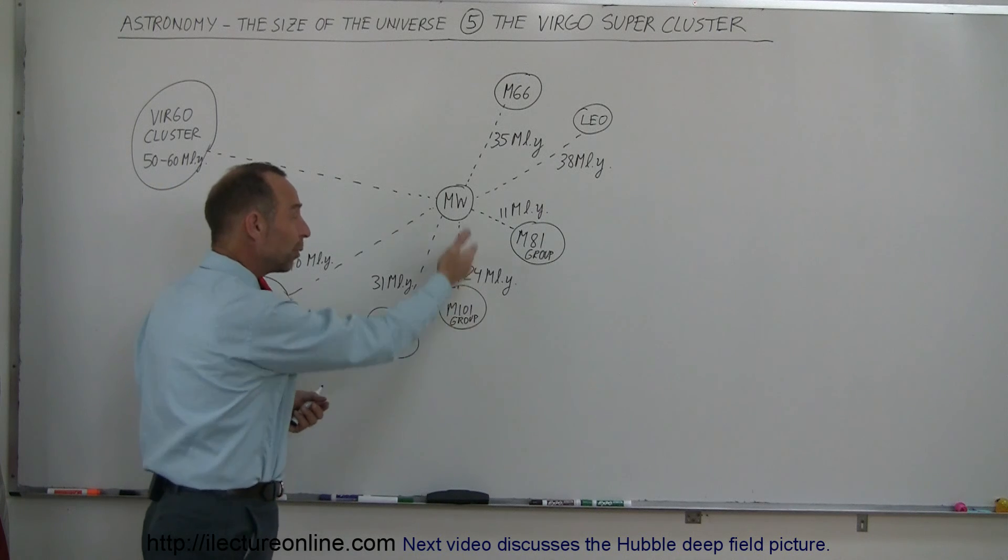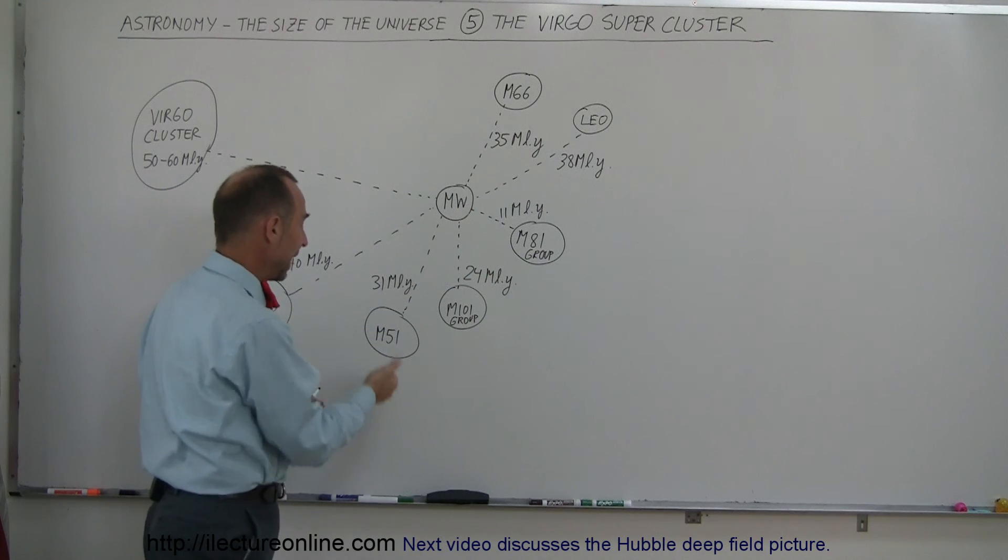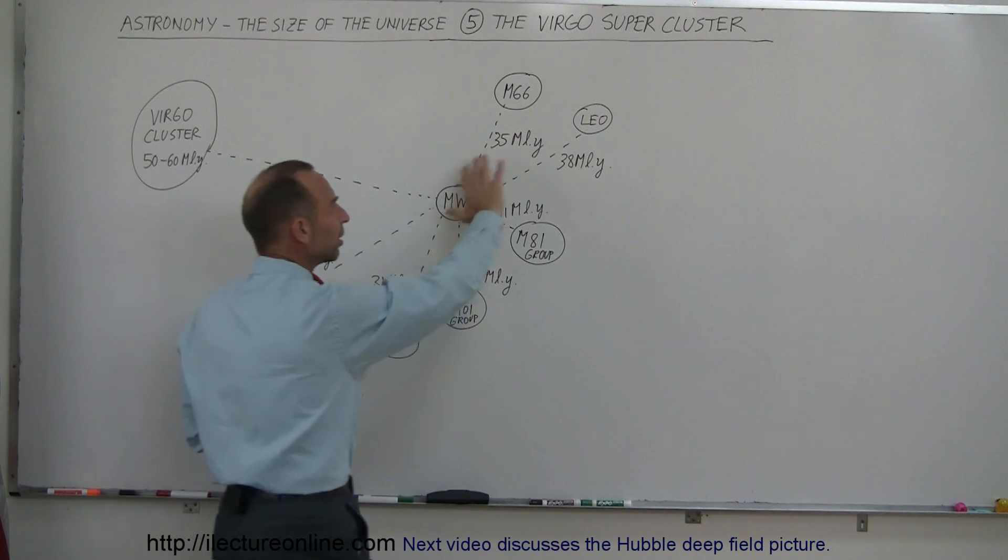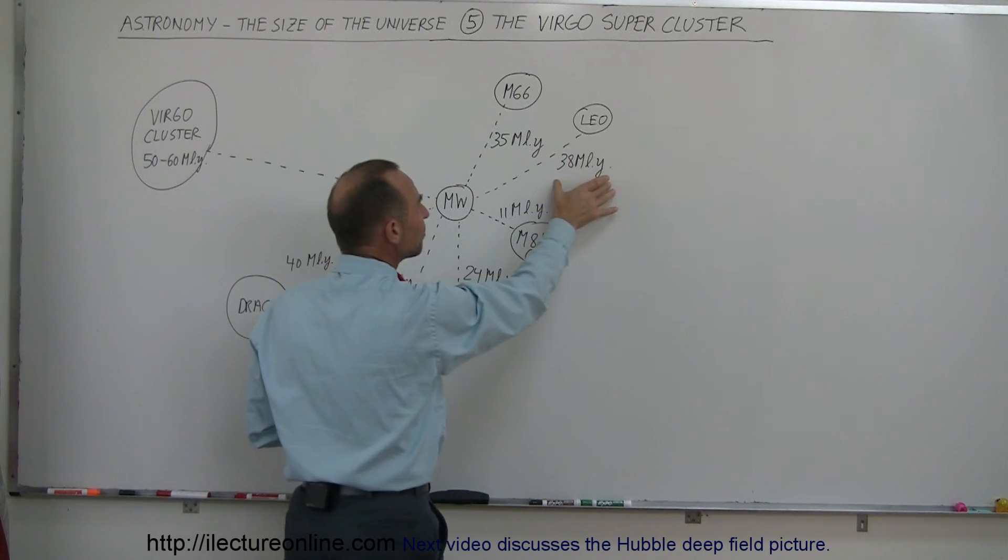The M101 group is 24 million light-years away, and the M51 group, 31 million light-years. And here, looking in the other direction, the Leo group is 38 million light-years.